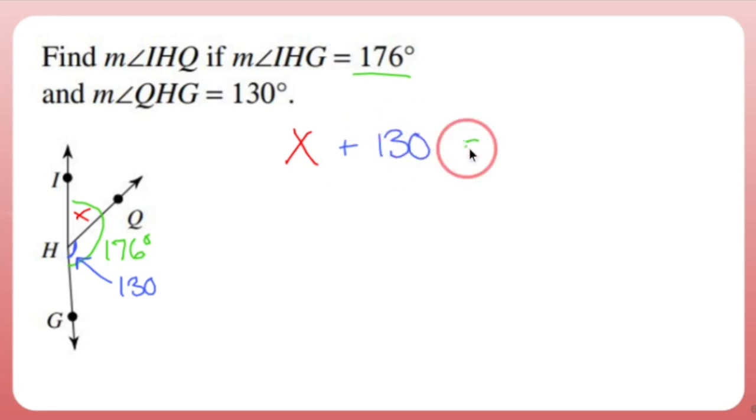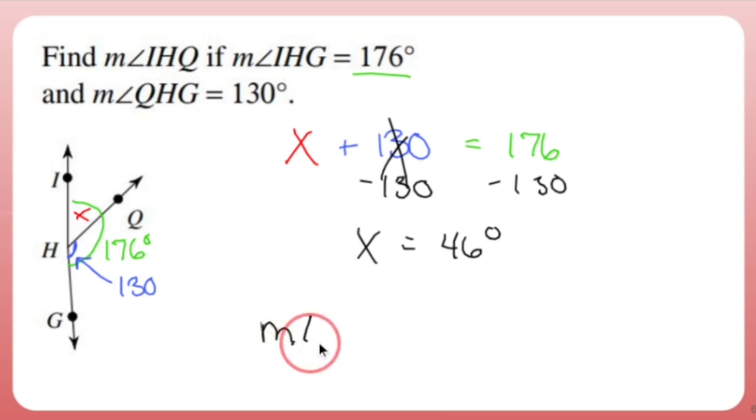So X plus 130 is 176. Why? Because the two smaller angles add up to make this big green angle here. All I have to do for this is subtract 130 degrees from both sides. And X is going to equal 46. My current age. Now I'm not going to call it X. I just used X as a variable. So what I'm going to do is go back to the original thing that it asked me to find. The measure of angle IHQ is 46 degrees.